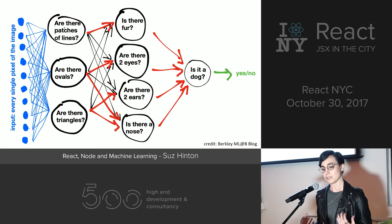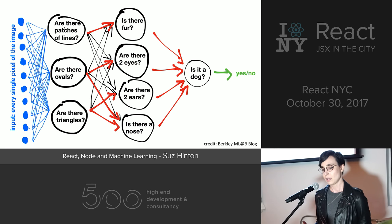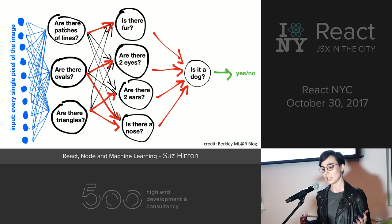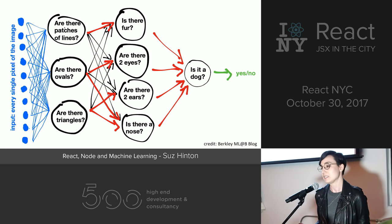If there are certain triangles at the right distance apart, maybe it's a nose or ears. Again, this is a gross oversimplification, but eventually it can convolve to: is it a dog? Yes or no.